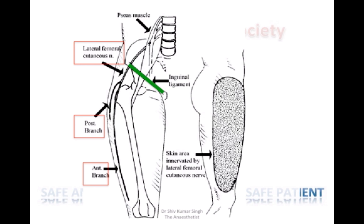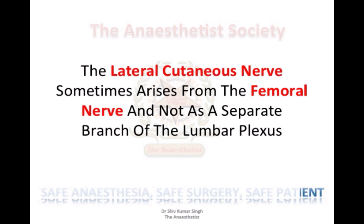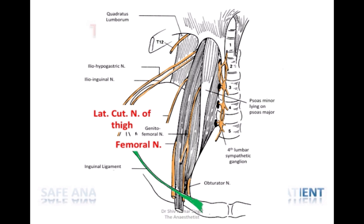This is the area supplied by the lateral cutaneous nerve of the thigh. The femoral nerve is the main nerve which needs to be blocked for this condition. Sometimes the lateral cutaneous nerve comes from the femoral nerve itself, in which case we don't actually have to block it separately. The lateral cutaneous nerve comes out from the lateral side of the psoas, as does the femoral nerve. Both nerves come out below the inguinal ligament — the femoral nerve lying below the fascia iliaca, and the lateral cutaneous nerve above the fascia iliaca.